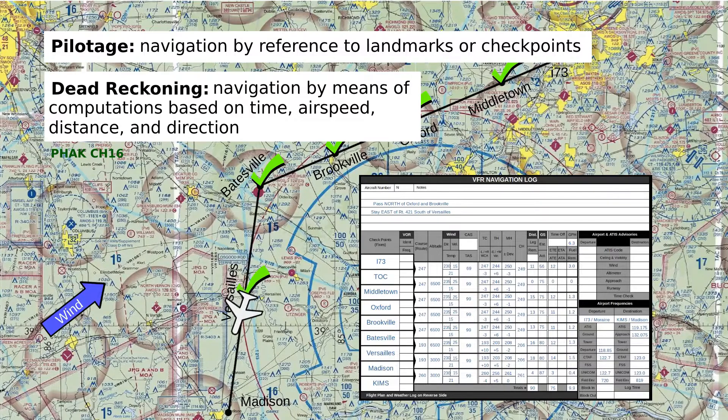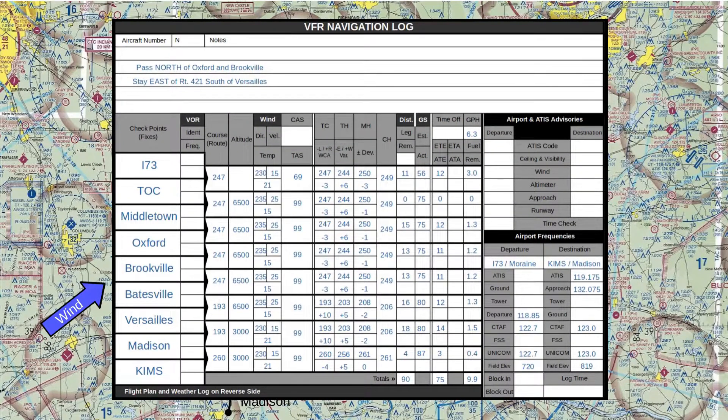The calculations done during flight planning allow you to predict the wind correction needed to track a course and the arrival time and fuel burn for each checkpoint along the way.